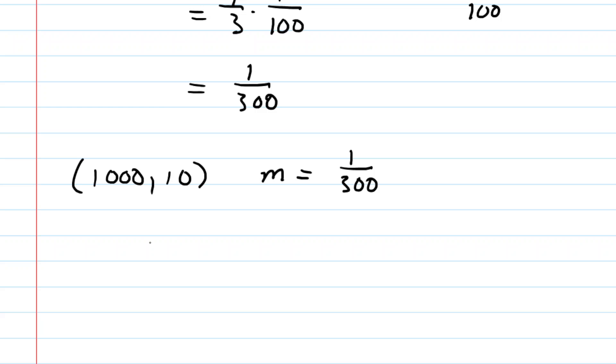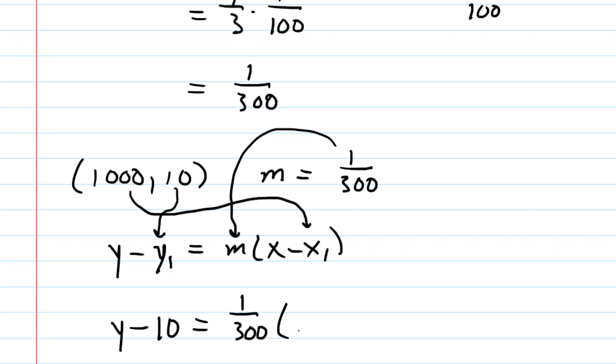Now we can package this into the equation of a tangent line. Let's recall the point-slope form for the equation of a tangent line. All we have to do is plug 10 in for the y1, the 1,000 in for the x1, and then the 1 over 300 in for the slope. So here is our tangent line equation. It's y minus 10 equals 1 over 300 times the quantity x minus 1,000.